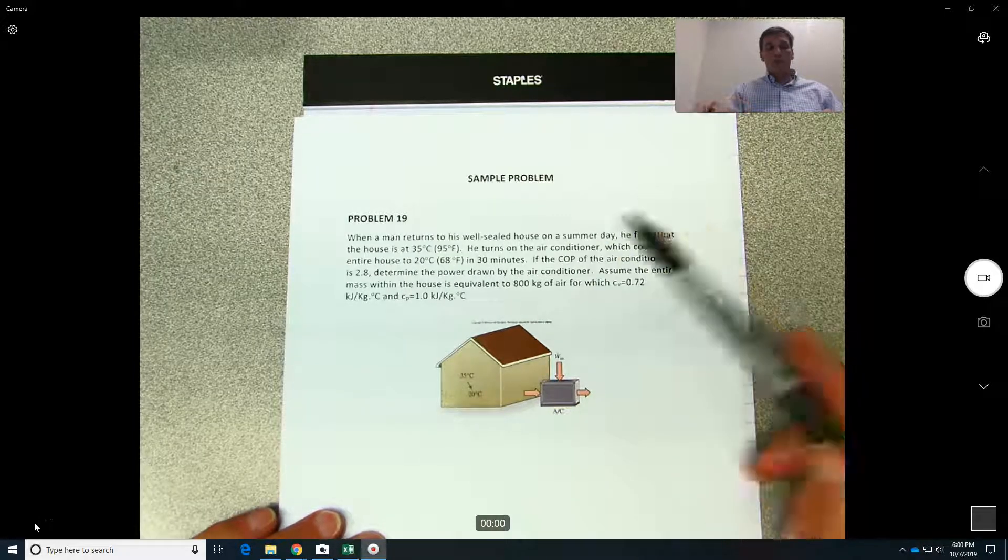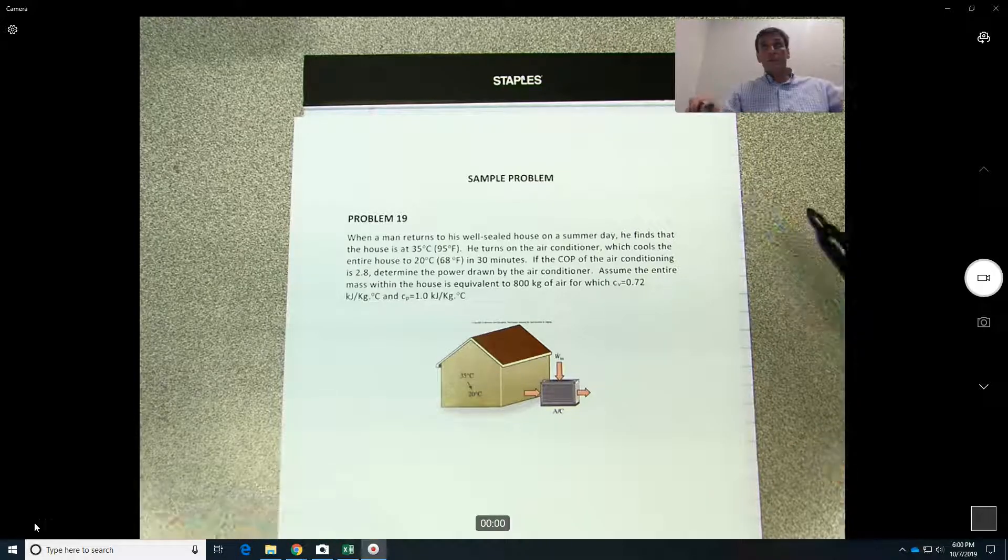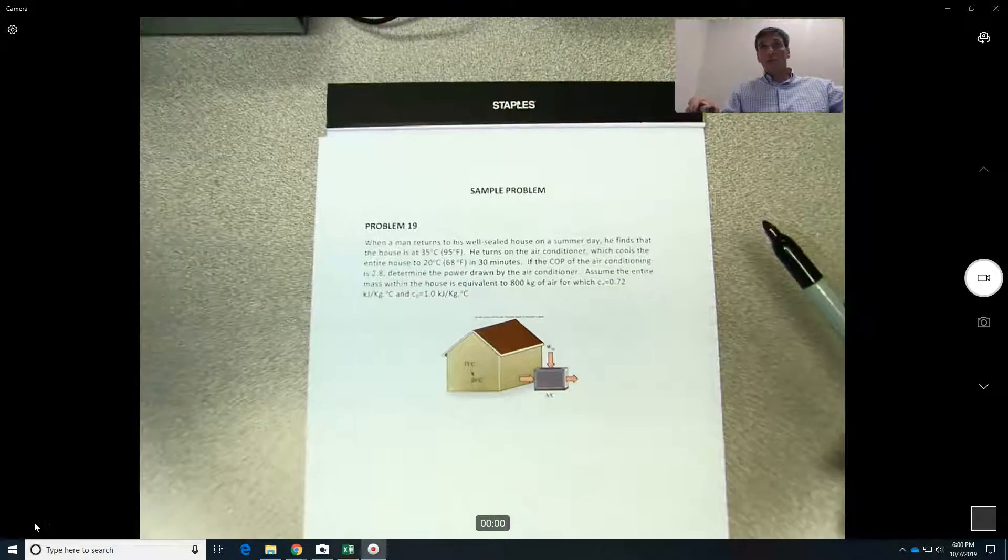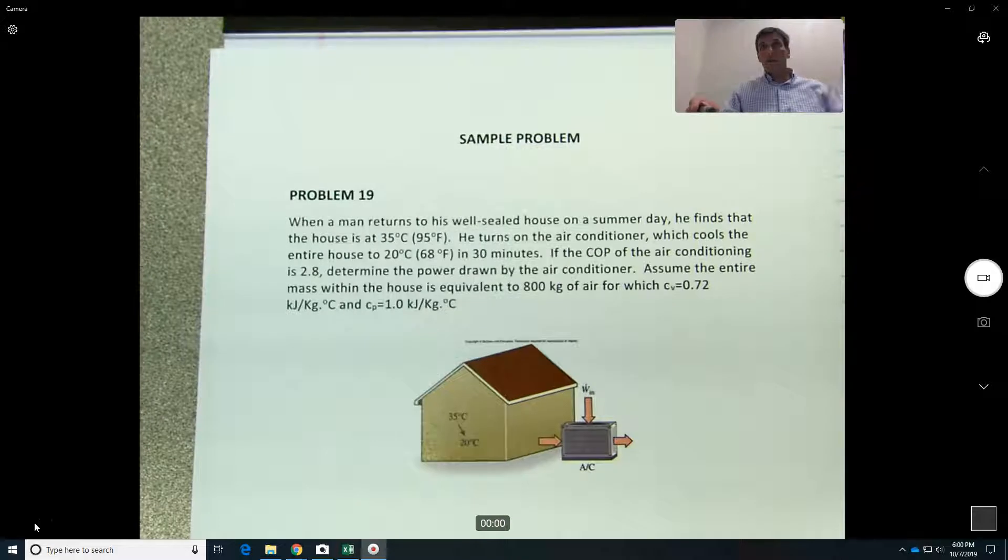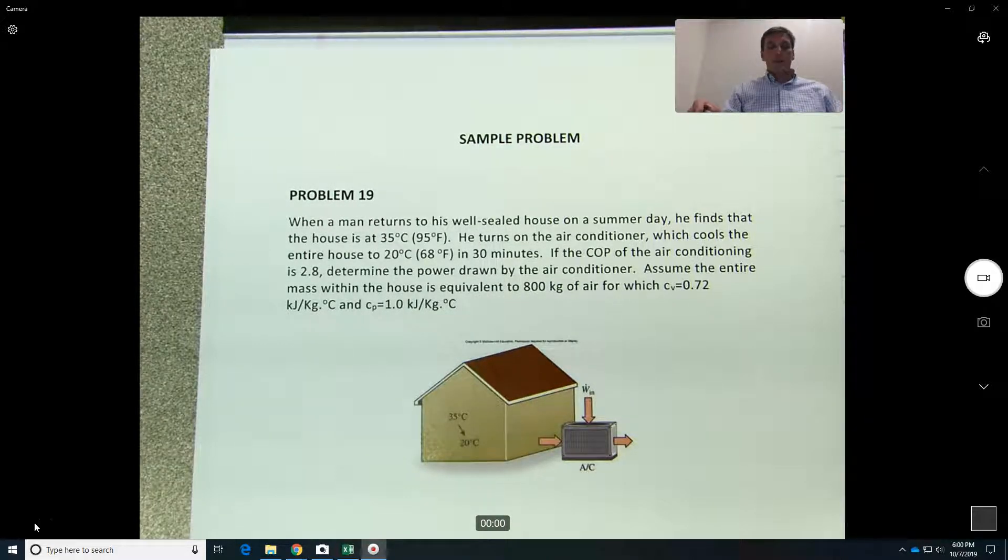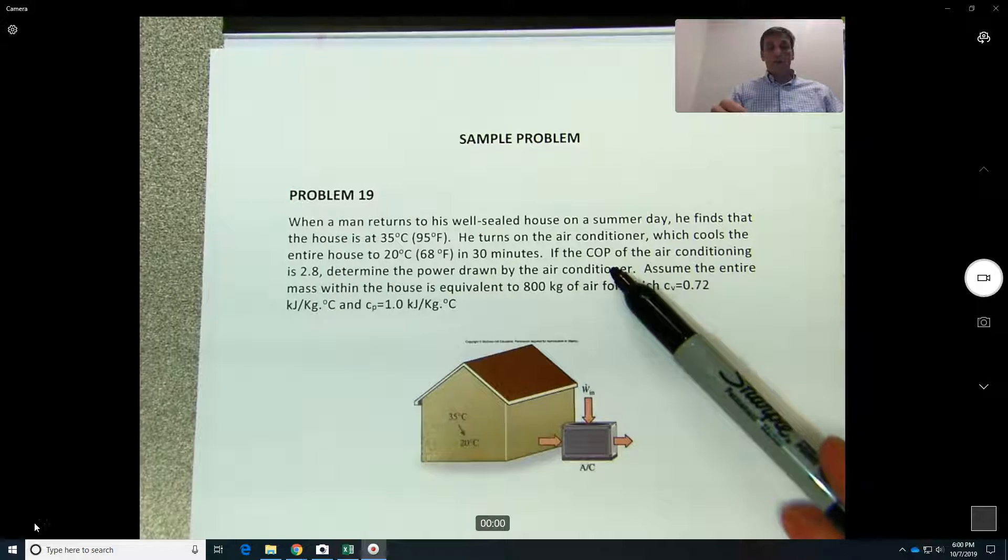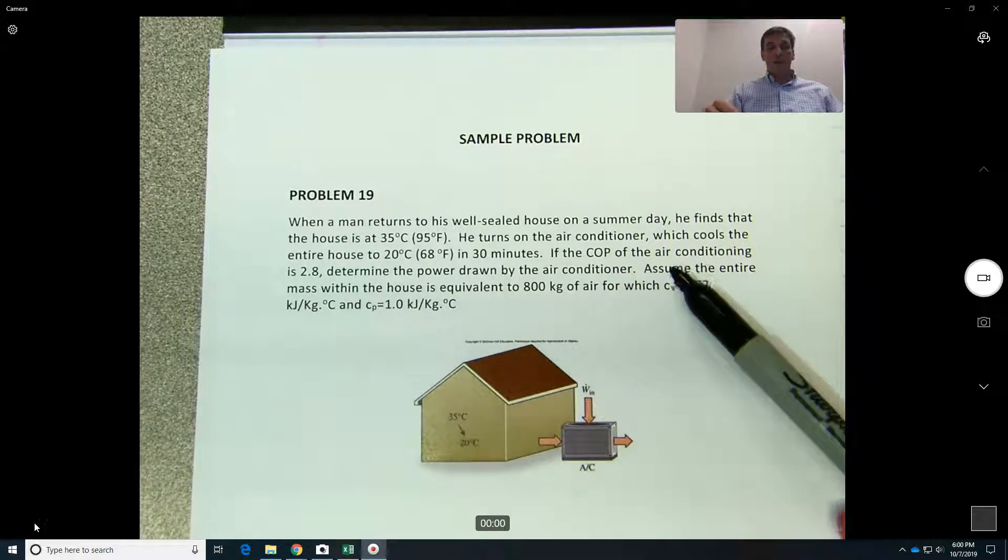35 degrees Celsius, which is 95 degrees Fahrenheit. Let me zoom in a little bit. It's too hot in the house, so he turns the air conditioner on to cool it to 68 degrees Fahrenheit, or 20 degrees Celsius. It takes about 30 minutes to achieve that.